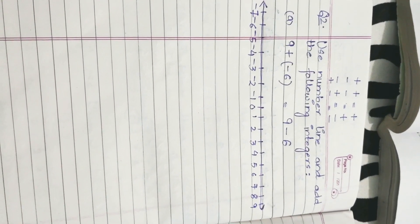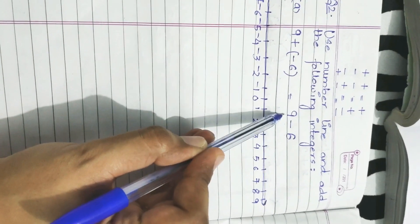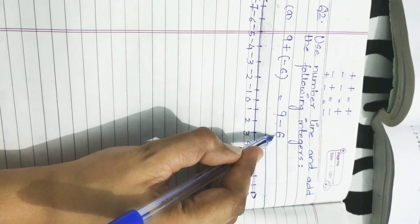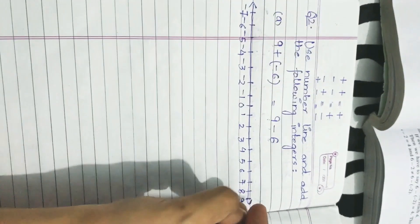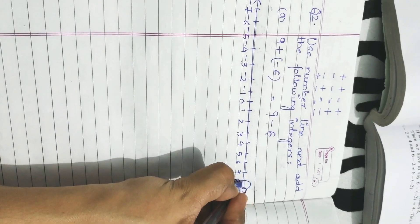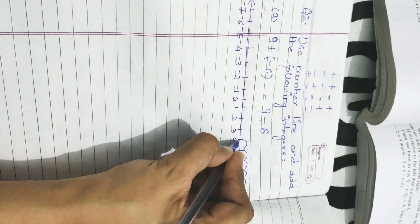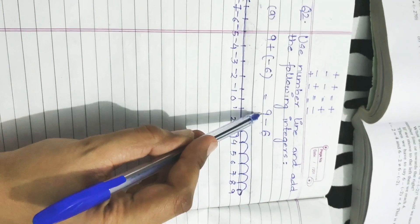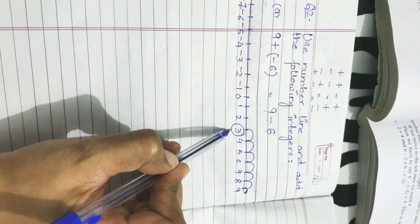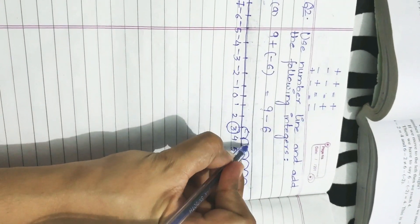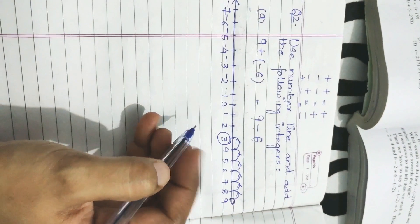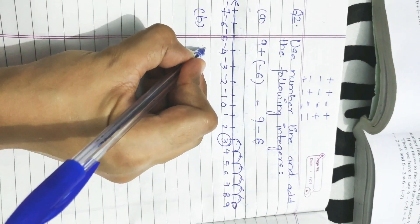Now let us solve part A. In part A, 9 is subtracted by 6, so we start from the first integer which is 9. There is a minus sign, which means we move in the left direction. We take six jumps starting from 9: 1, 2, 3, 4, 5, 6. We have reached 3. You can check: 9 minus 6 equals 3. Our answer on the number line is also 3. Please always show the arrows on the jumps so it is clear which direction we are moving.